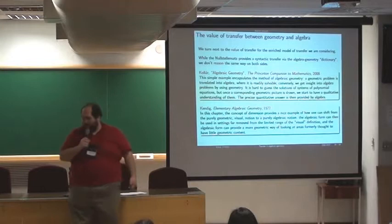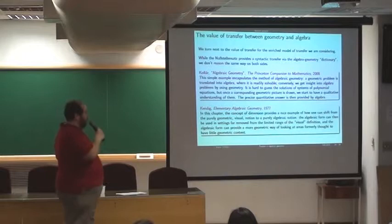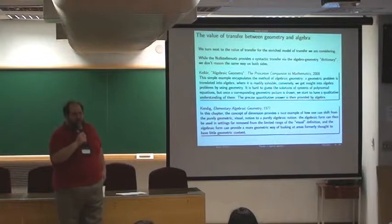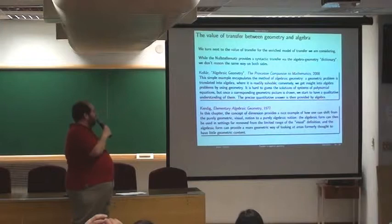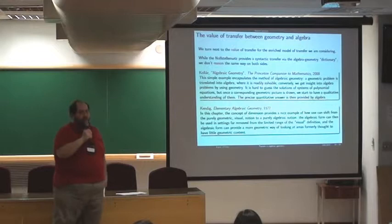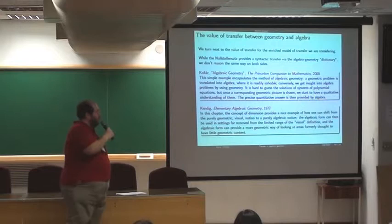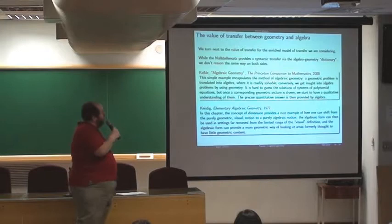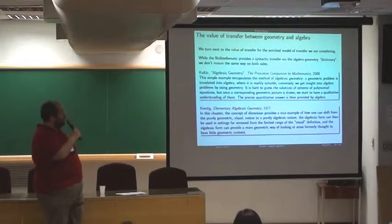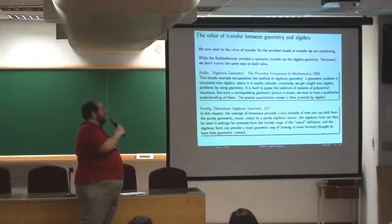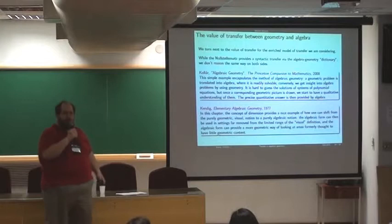So I just tried to tell you a story about the nature of transfer on this more enriched story. Let me say a few words about the value of this transfer. So here I want to resort to quotes from mathematicians. The easy way out for any scoundrel like me. So for instance, I want to give you three quotes that I think are indicative of the kind of value I want to talk about. So we have this passage from Kollár from the recent Princeton Companion to Mathematics in his article on algebraic geometry. He says that, talking about an example, the simple example encapsulates the method of algebraic geometry. A geometric problem is translated into algebra where it is readily solvable. Conversely, we get insight into algebra problems by using geometry. It is hard to guess the solutions of systems of polynomial equations. But once a corresponding geometric picture is drawn, we start to have a qualitative understanding of them. The precise quantitative answer is then provided by algebra.